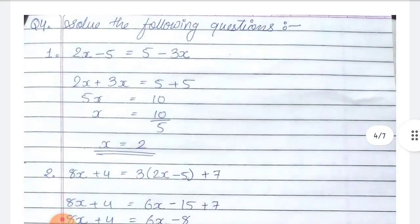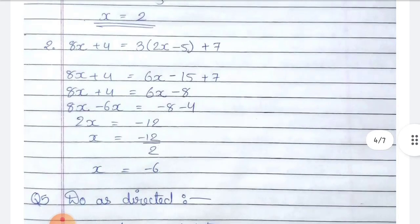Question number 4: solve the following equations. Number 1: 2x minus 5 is equal to 5 minus 3x. So 2x plus 3x is 5x, which is equal to 5 plus 5, which is 10. Now x is equal to 10 by 5, which is 2. So the value of x is 2.